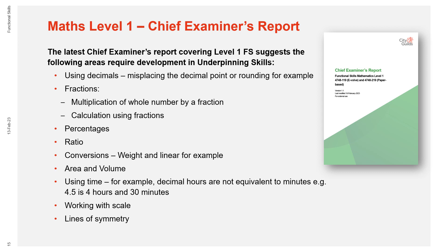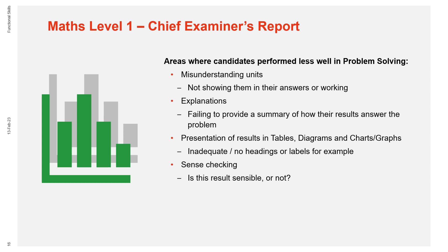The guidance for delivery document has been designed to provide support with these topics. The areas where candidates performed less well in problem solving included misunderstanding units, particularly with reference to linear dimensions such as millimetres, centimetres and metres. Often candidates were let down by not showing units in their answers or their workings, and giving answers in the wrong format or to the wrong number of decimal places often lost marks. Explanations must link back to the original question, and failing to provide a summary of how their results answer the problem was also an area where candidates lost marks.